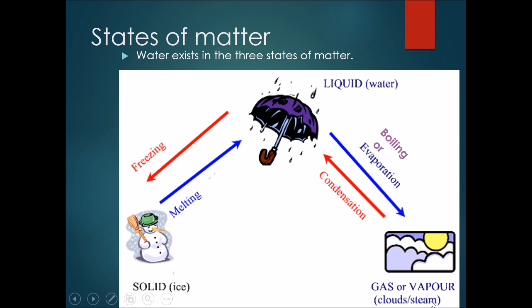If it goes from solid and it becomes liquid, this process is called melting. If it goes from liquid to gas, this process is called boiling or evaporation. If it goes from gas to liquid, this process is called condensation. If it goes from liquid to solid, this process is called freezing or solidification.